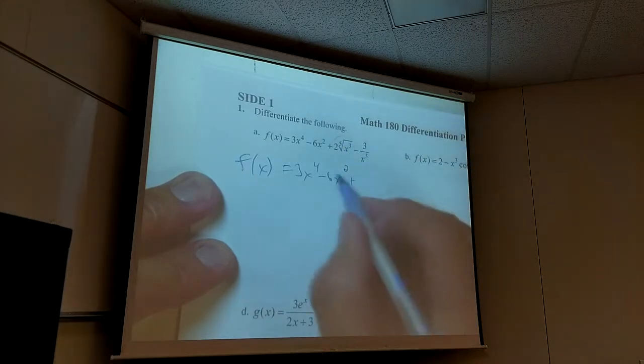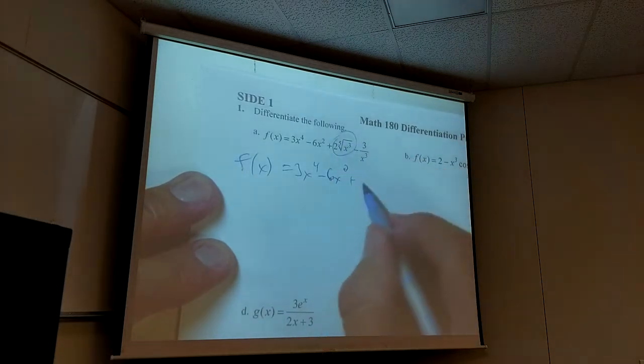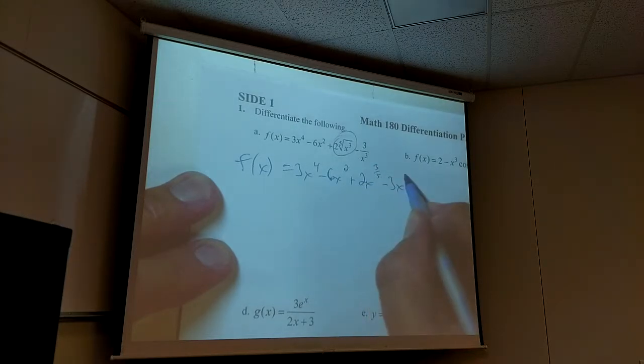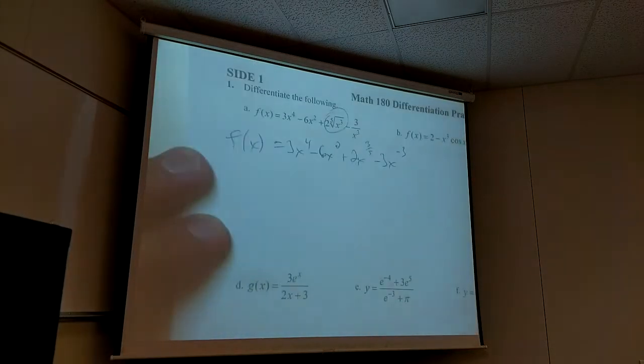How do I rewrite this here? Good. Minus 3x to the? Beautiful. Now I do a derivative.